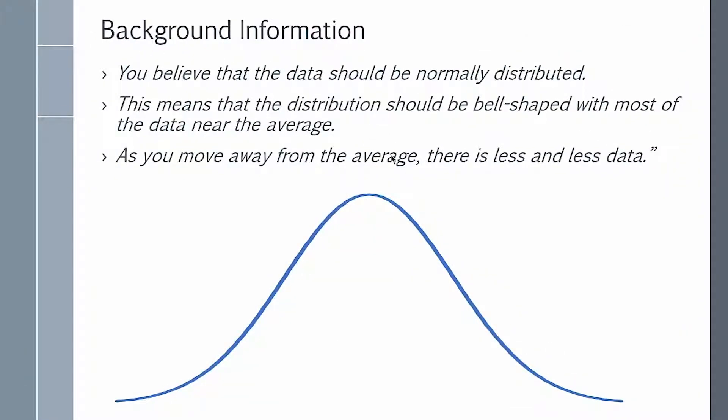You believe the data should be normally distributed for this characteristic. What that means is most of the data is going to be near the average, which is the high point on the curve, and as you move away from that average, there's less and less data until you get down to almost zero.